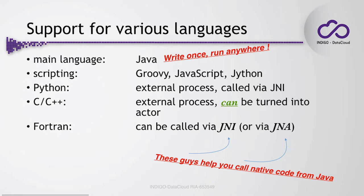When it comes to languages, you can use anything you like as long as you can run it from Java. Kepler itself is written in Java, so it will run everywhere Java is available. You can directly use scripting languages like Groovy, JavaScript, or Jython, with dedicated actors for each. You can execute Python either via calling it through JNI or as an external process. You can even run Fortran via JNI or JNA — these technologies allow you to run native code directly from Java, so existing native code can also be run in Kepler.